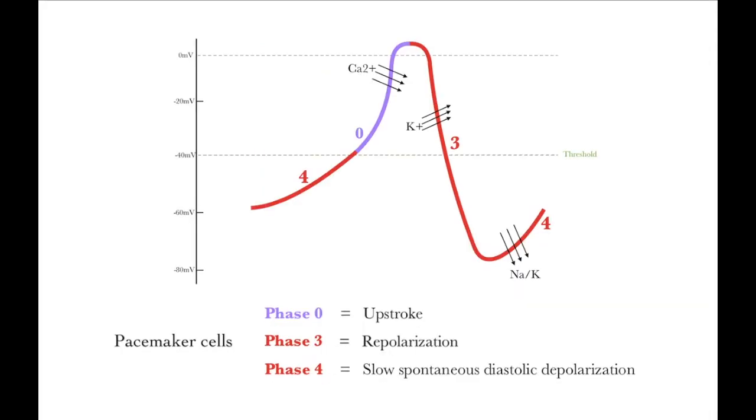Pacemaker cells' action potential. In pacemaker cells, for example sinuatrial node cells, the increase in membrane voltage is mainly due to activation of L-type calcium channels. The L-type calcium channels are activated more slowly than the sodium channels. Therefore, the depolarization slope in the pacemaker action potential waveform is less steep than in the non-pacemaker action potential waveform.